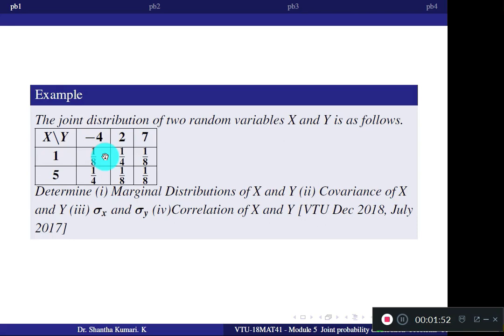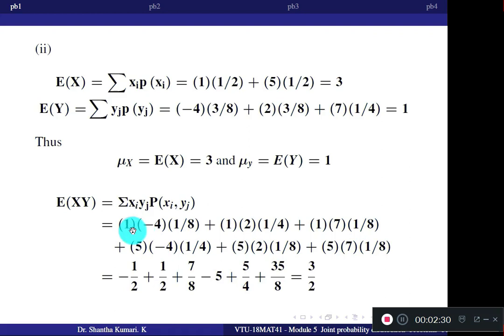Similarly, 1×2×(1/4), plus 1×7×(1/8). For the second row, X=5 and Y=minus 4, giving 5×(minus 4)×(1/4). Then 5×2×(1/8), plus 5×7×(1/8). After multiplying and adding all terms, the answer is 3/2.